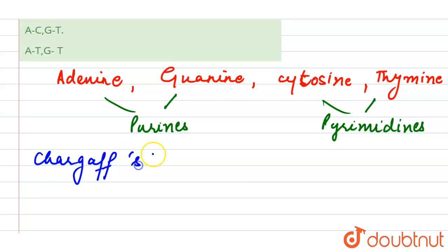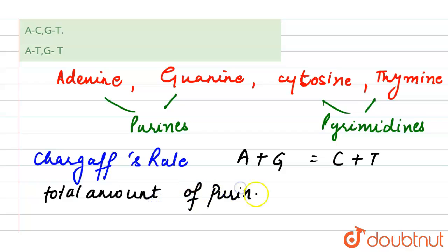So here we will follow the Chargaff rules. And the Chargaff rule says, according to the Chargaff rule, we have one condition that is A+G = C+T. That is, the total amount of purines equals the total amount of pyrimidines.